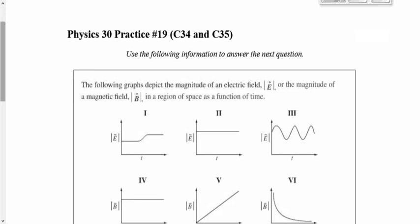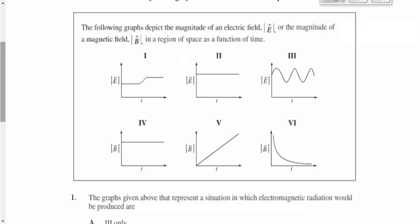This is practice question set number 19. Question number one gives us six different graphs of electric field or magnetic field versus time. We want to know which of these graphs will produce electromagnetic radiation.